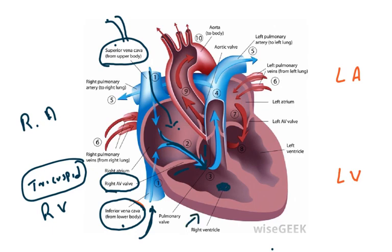Once the blood gets into the right ventricle, when it contracts the blood moves to the pulmonary artery. Pulmonary means lung — the artery that takes blood to that place. This is covered by a valve known as the pulmonary valve, which again enables unidirectional flow from right ventricle to pulmonary artery. From this pulmonary artery the blood reaches the lungs.